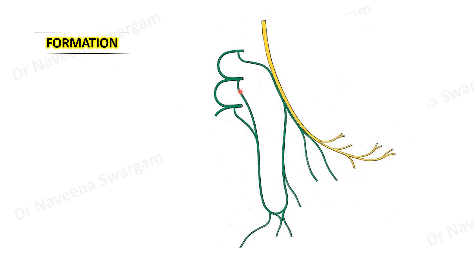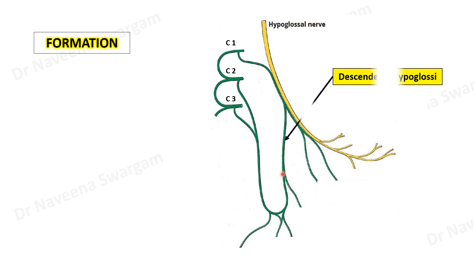It is formed by the branches from ventral rami of C1, C2 and C3 spinal nerves. The branch from C1 spinal nerve enters into the hypoglossal nerve and runs within it for a short distance, then it leaves the nerve.